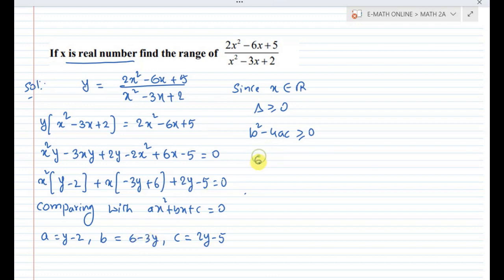b is 6 minus 3y, so (6 minus 3y) whole square minus 4 times a which is (y minus 2) times c which is (2y minus 5) which is greater than or equal to 0. Expanding: 36 plus 9y square minus 36y minus 4 times y into 2y, which is 2y square, y into minus 5 is minus 5y, minus 2 into 2 is minus 4y, plus 10, which is greater than or equal to 0.